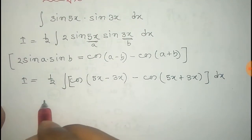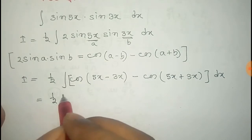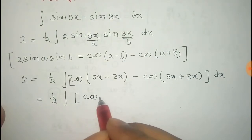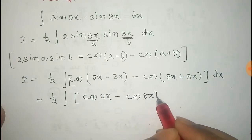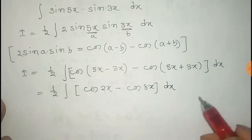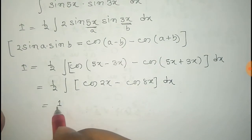Now that is equals to half of integral cosine 2x minus cosine 8x dx. That is equals to half.